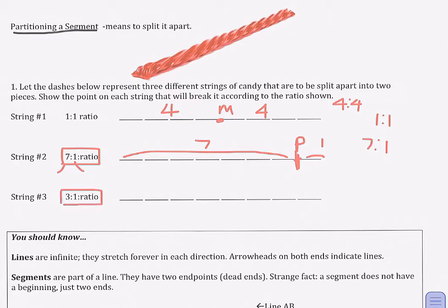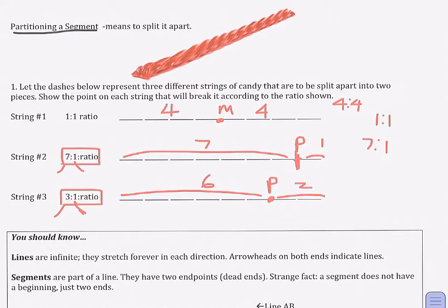This one might be a little more difficult. If the ratio of the candy is supposed to be three to one, where would you split the candy? A ratio of three to one means one kid gets triple the amount compared to the other. If you chose this point here, it would give the first kid six inches of candy and the second kid two inches of candy. So the one kid is getting triple the amount — you'd get a ratio of six to two, which reduces to three to one.